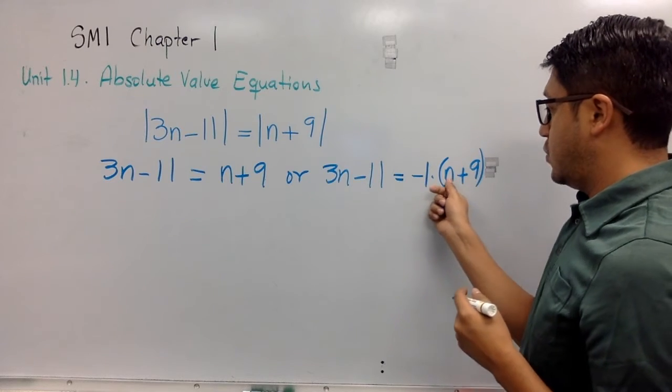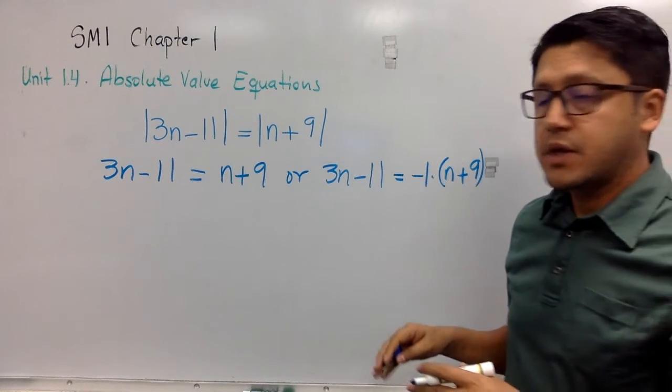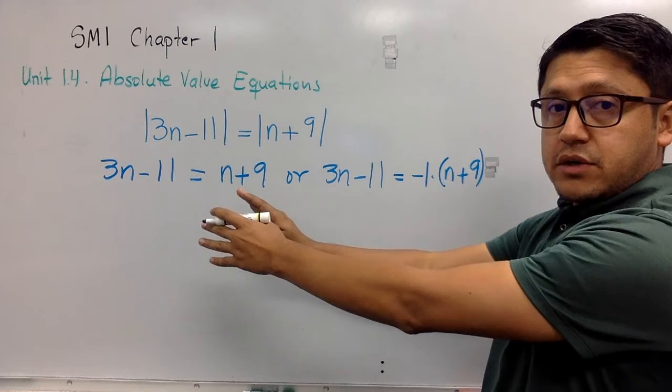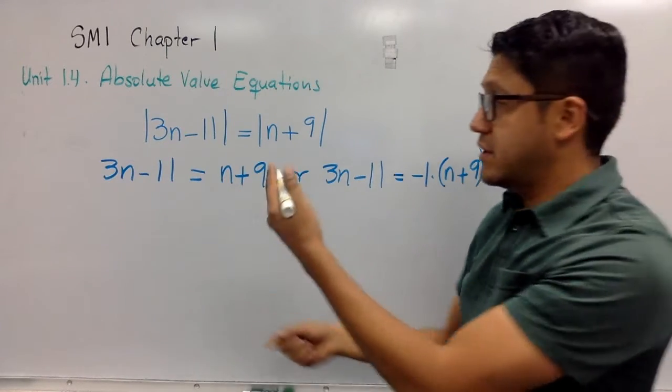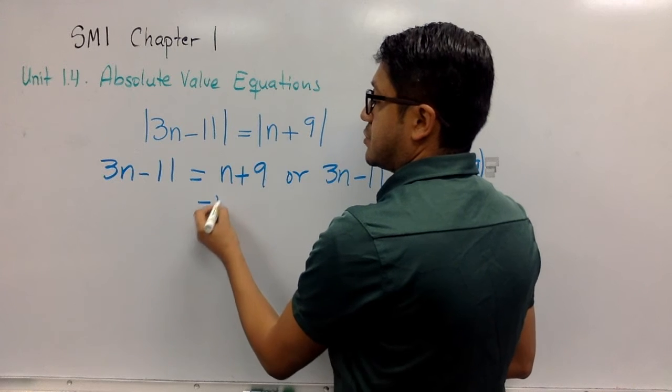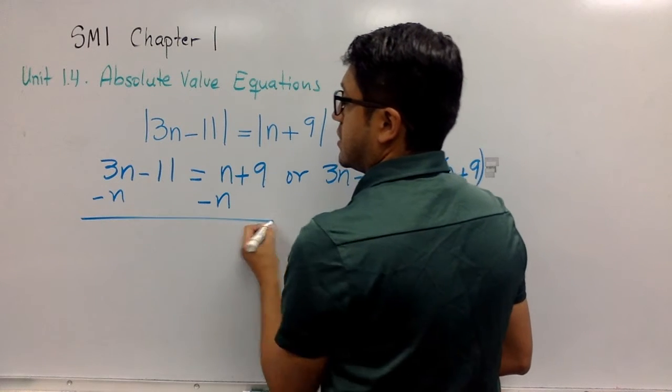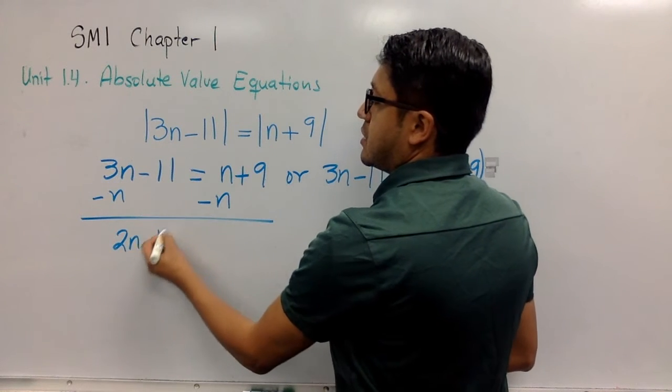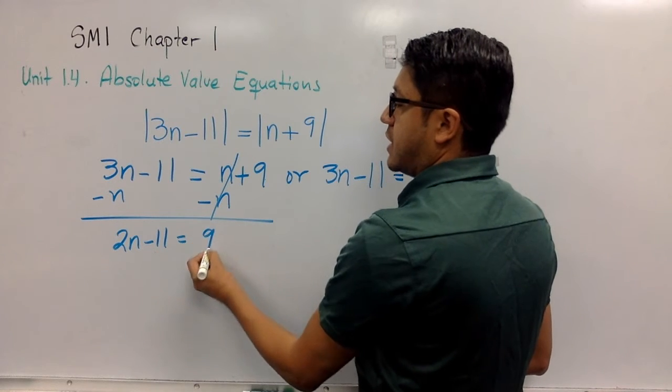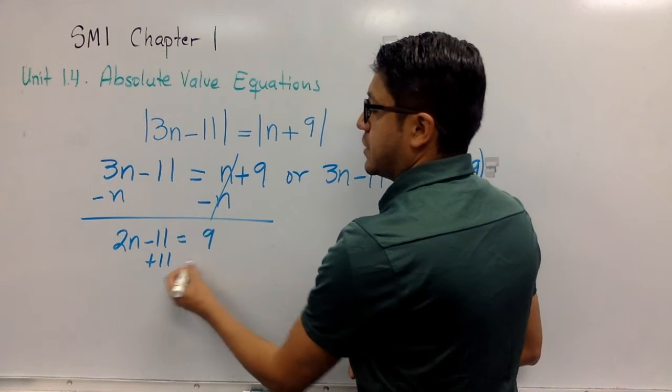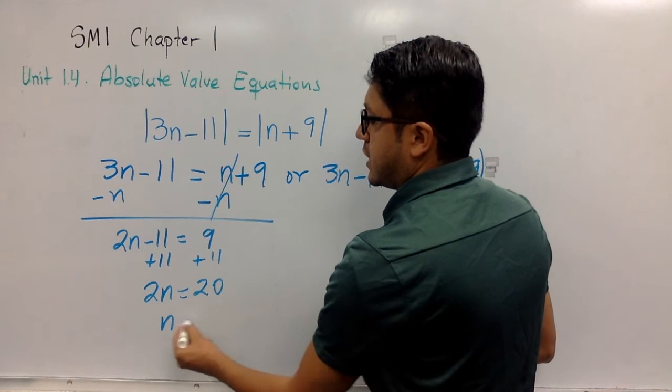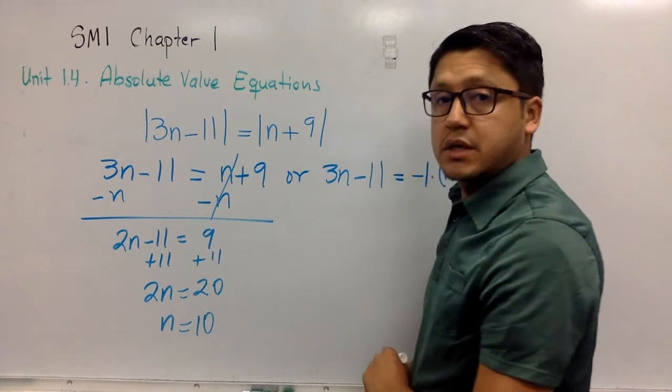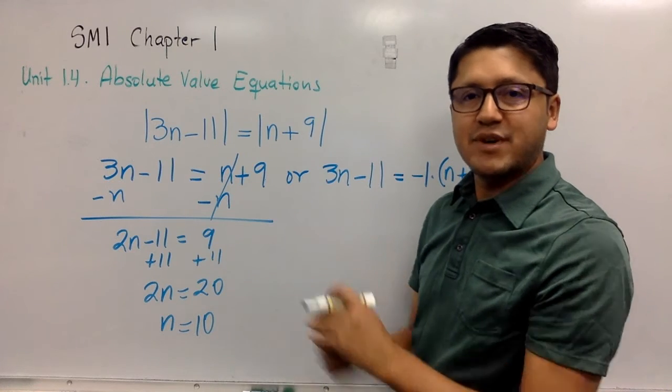Let's take a look and solve this equation. We subtract n, so you get 2n minus 11 equals 9. We add 11, so it's 2n equals 20, so n equals 10. Done, right?